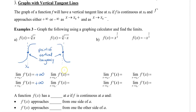For the cube root of negative x, when I approach x₀ from the right, you can see that the slopes are very negative, so we say that it's negative infinity. From the left, it's also negative infinity. So therefore, that's why we have a vertical tangent.